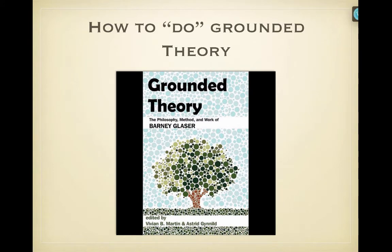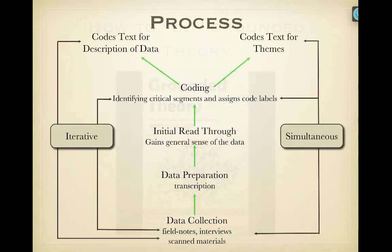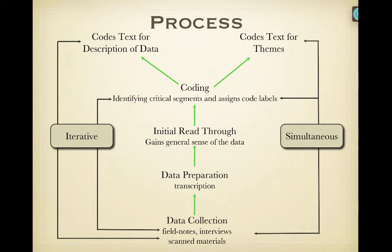So how do you do grounded theory? This chart may look a bit confusing at first, but I think you'll get the gist of how this works. You would start at the very bottom where you are going to go ahead and collect information — that's the data collection part. It says field notes, interview, scanned materials, documents, and so on. Going up the chart, you then would prepare transcripts if you did an interview, and then you read through those transcripts to gain a general sense of things. And then you will start coding the document and breaking it up into chunks.